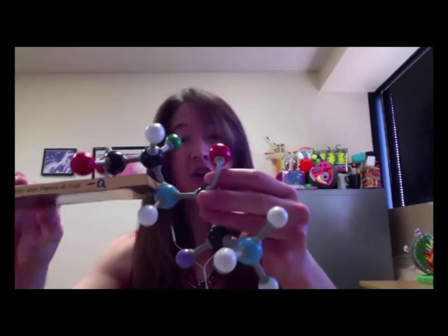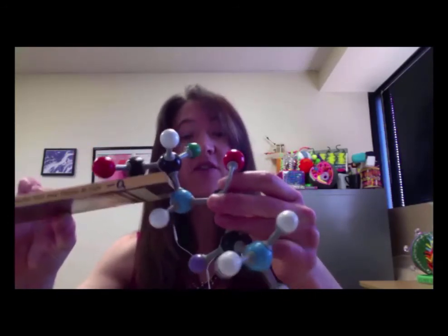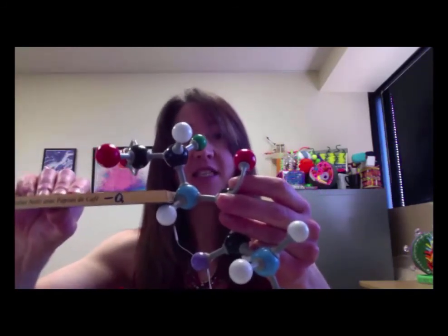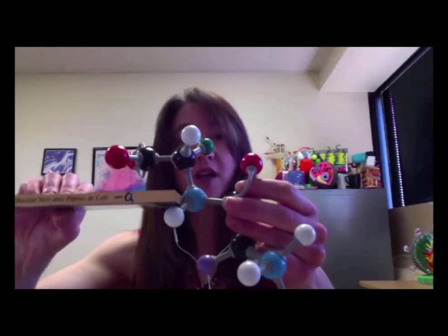In this particular conformation that we currently see, we can recognize that the two alpha carbons, this one here and this one here, are on opposite sides of the plane. This is one possible conformation.